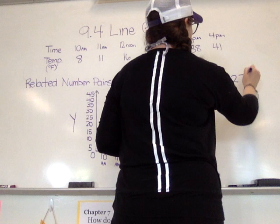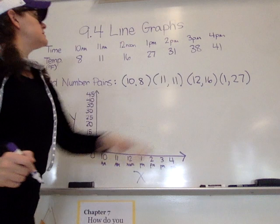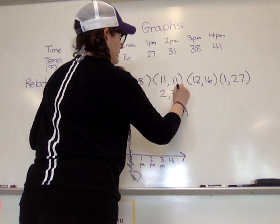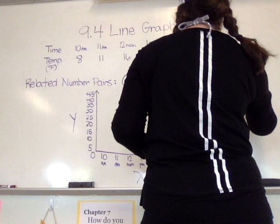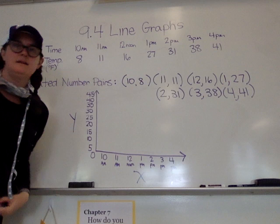I'm going to write right below over here so we don't run out of room. We have 2 comma 31. We have 3 comma 38. And we have 4 comma 41. Those are our related number pairs.